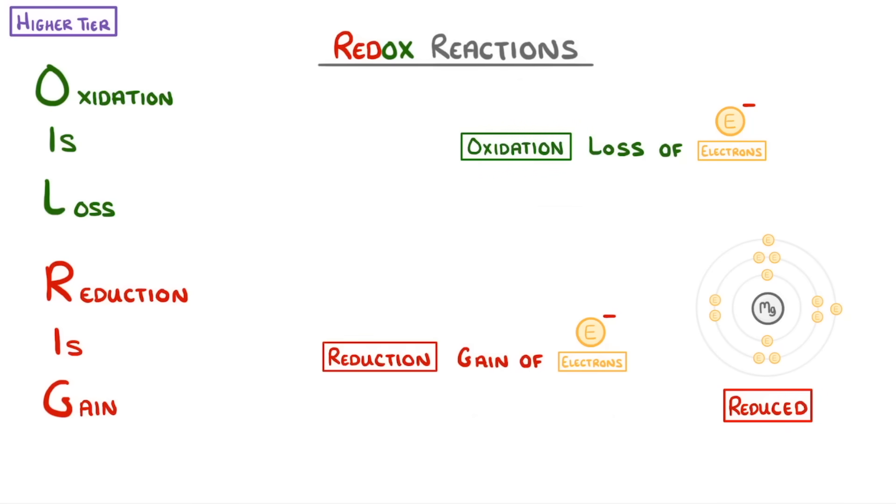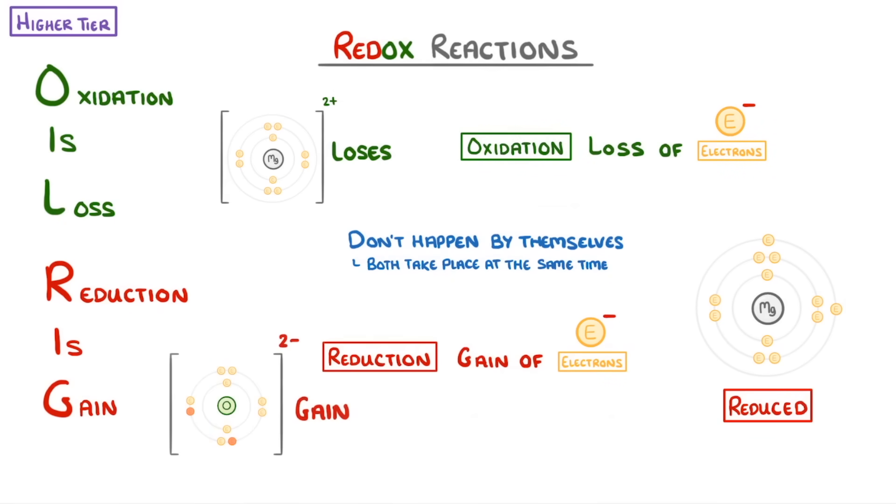Most of the time though, these oxidation and reduction reactions don't happen by themselves. Instead, they both take place at the same time. Because if one substance loses electrons, then another substance has to gain them. And because both happen together, we call them redox reactions, which just means reduction oxidation reactions.